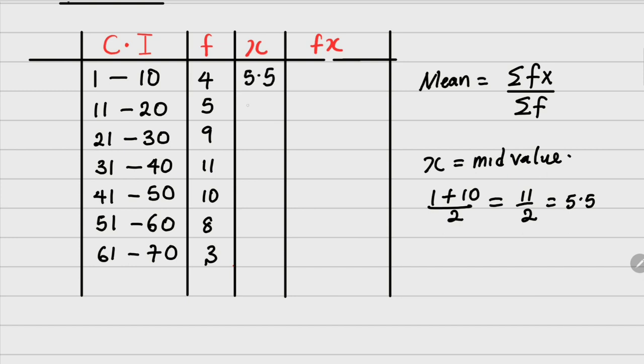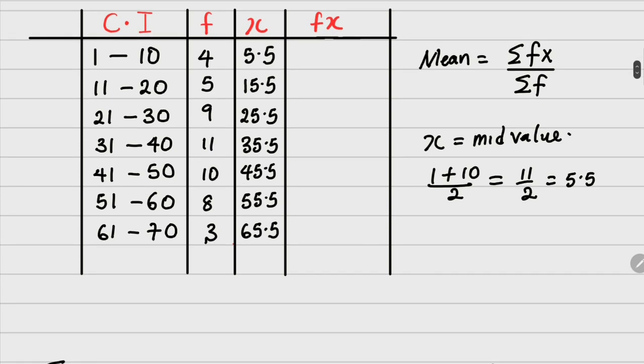The next, if you do it, is 15.5. If you check, there's a trend here because the class width of the class interval is actually equal, which is 10 all through. So you can just keep adding 10 to save your time. This is going to be 25.5, 35.5, and so on. Since we have this, we need to fill our fx column.